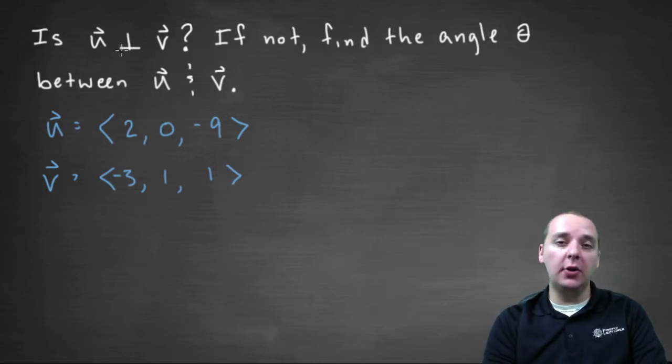So I know they are going to be orthogonal if I can take their dot product and get zero. So let's do that first. So if we take u dot v,